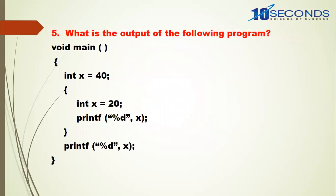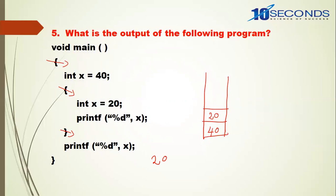What is the output of the following program? When the CPU enters the opening brace, a stack is created and x equal to 40 is pushed onto the stack. When it enters the next opening brace, x equal to 20 is pushed onto the stack. printf %d — the top of the stack is 20, so 20 is printed first. When it exits the inner closing brace, 20 is popped off. Now the top of the stack is 40, so printf %d prints 40. The output of the program is 20 40.